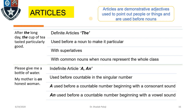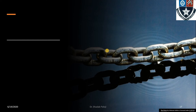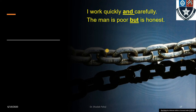Now what are articles actually? Articles are demonstrative adjectives. We know the function of an adjective is qualifying a noun or pronoun. For example: 'It is the long day' — how was the day? Long. 'The cup of tea tasted particularly good' — how did the tea taste? Good. So 'the,' 'a,' and 'an' are articles which are actually demonstrative adjectives — they point out people or things and are used before the noun.